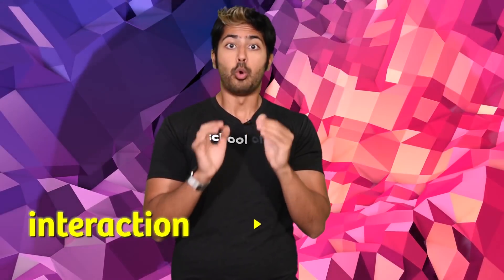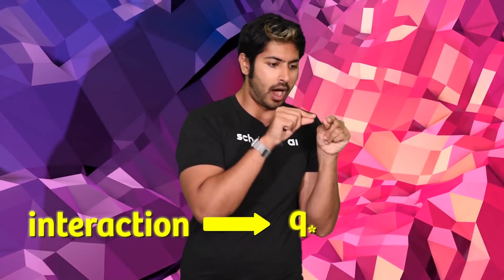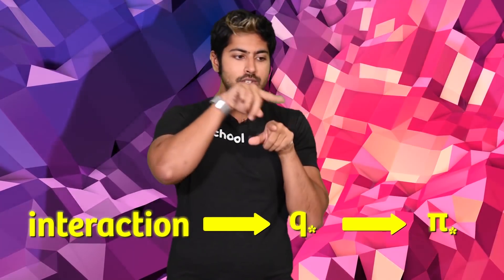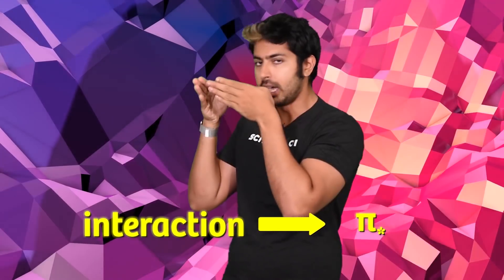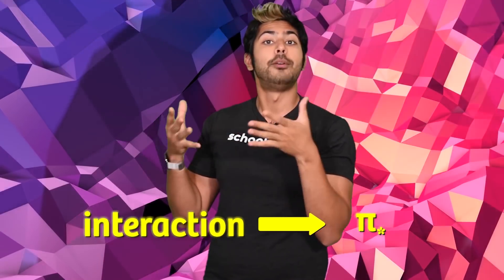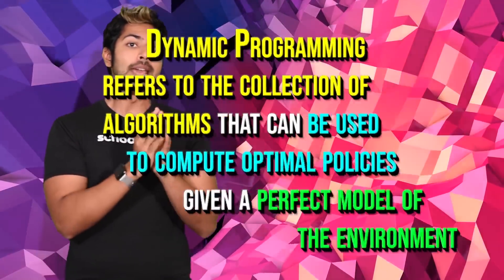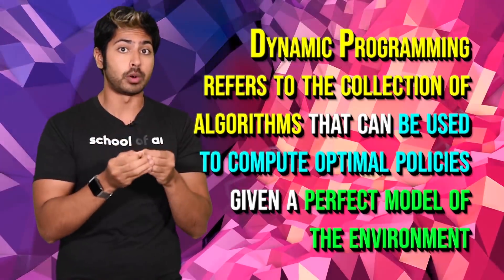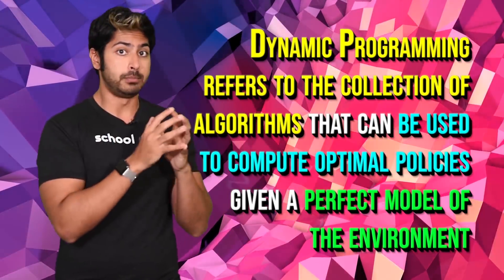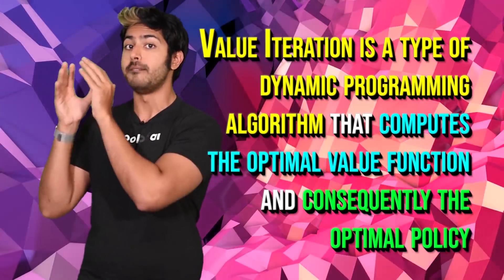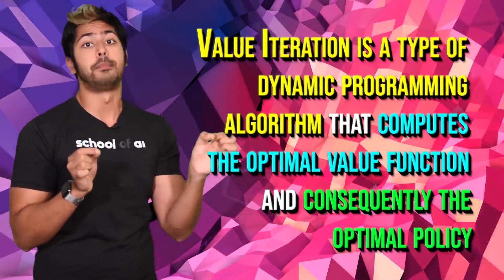Also, did you notice something? We had that intermediate step where we computed the optimal value function to then compute the optimal policy. But what if we just skipped that intermediate step and computed the optimal policy directly? What type of algorithm should we use for that? That's the topic for the next video. Three points to remember from this video: dynamic programming refers to the collection of algorithms that compute optimal policies given a perfect environment model; value iteration is a type of dynamic programming that computes the optimal value function and, consequently, the optimal policy.